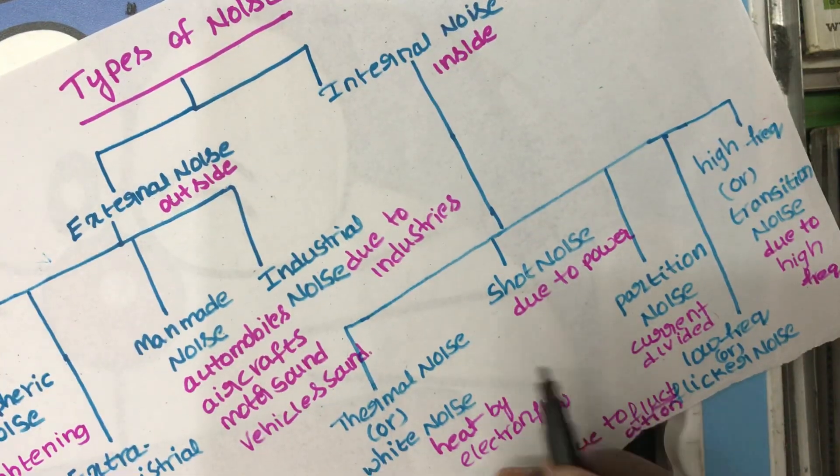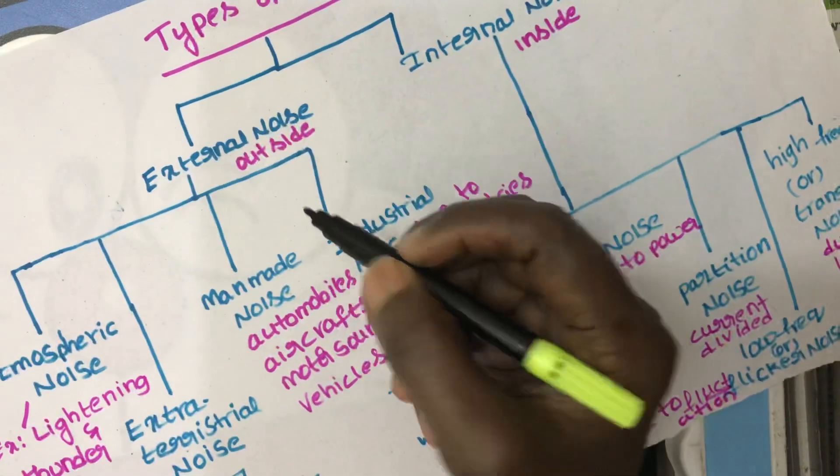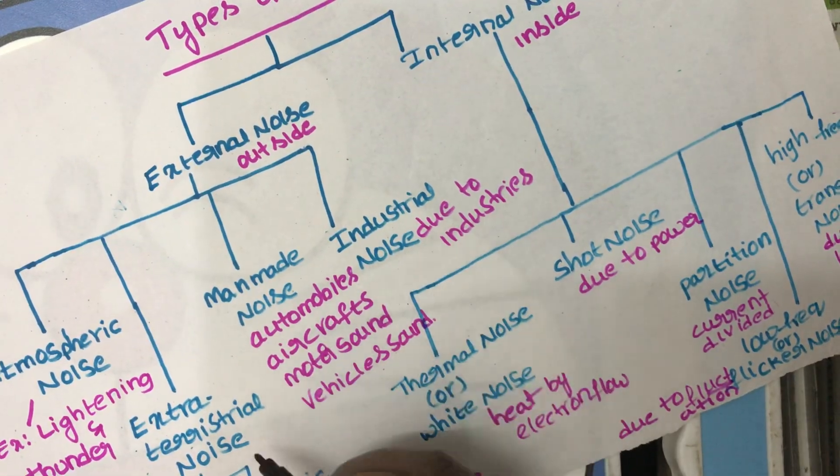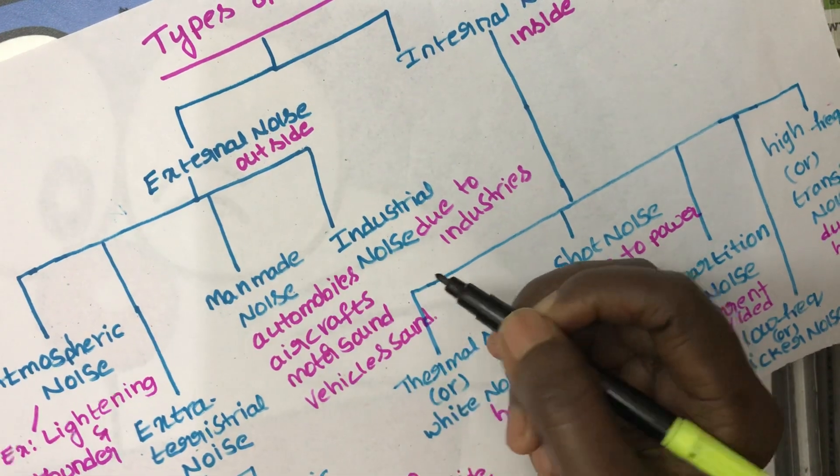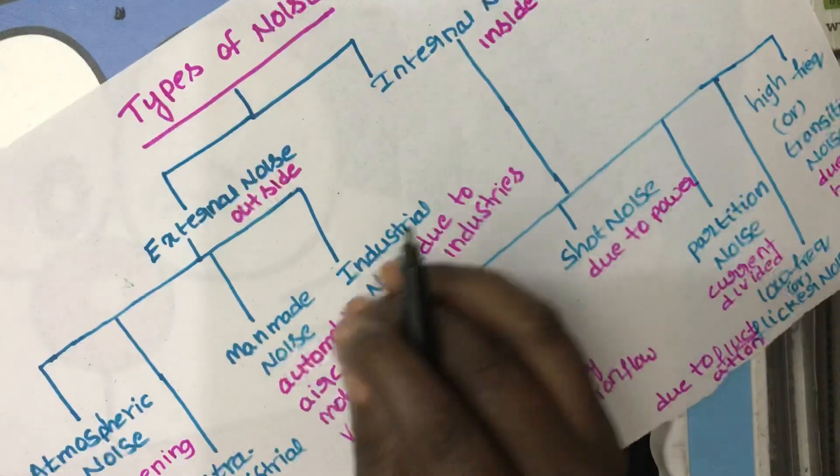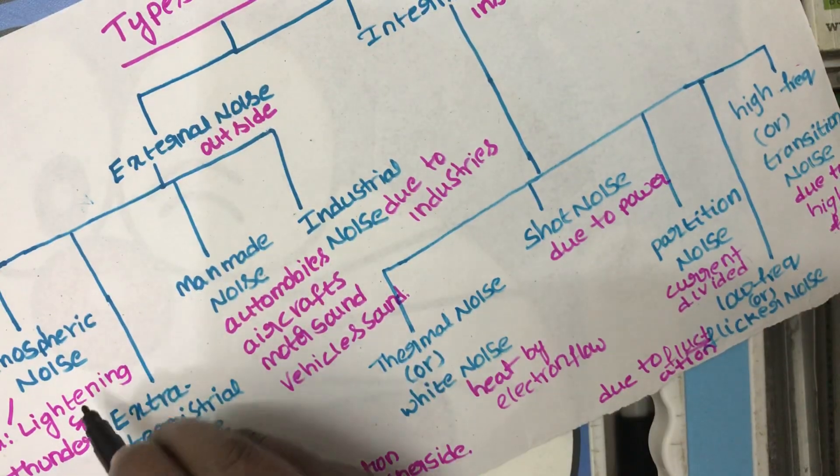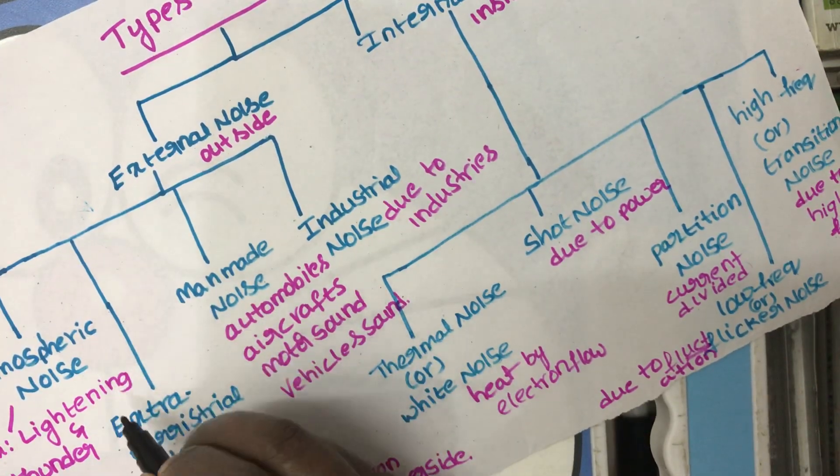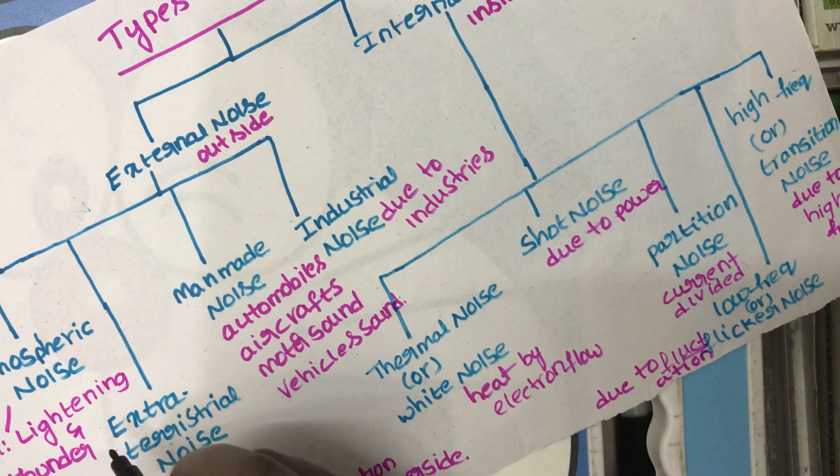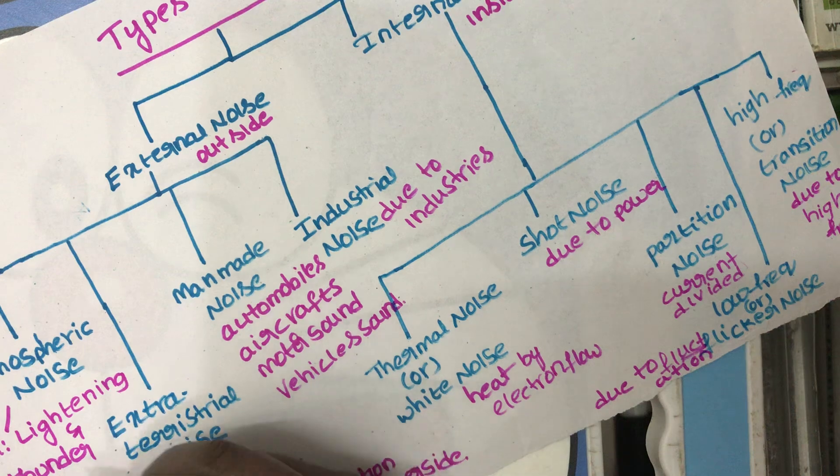External noise is further classified into four types: atmospheric noise, extraterrestrial noise, man-made noise, and industrial noise. First, atmospheric noise occurs because of change in atmosphere like lightning, thundering, etc.